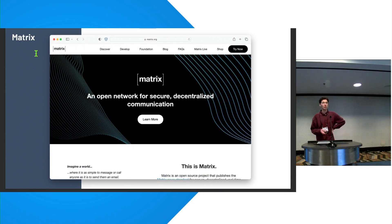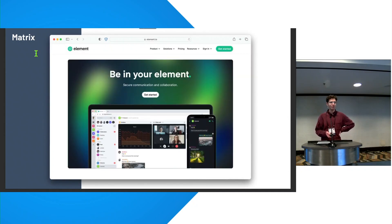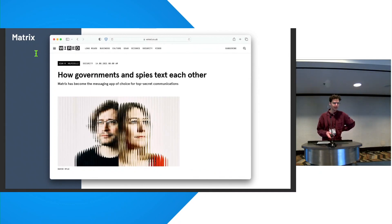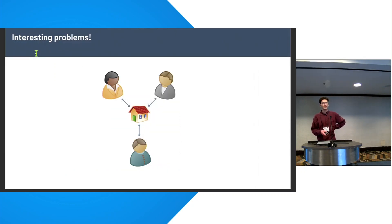So first of all, what is Matrix? Matrix is a secure, federated platform for communication, and they have a bunch of different apps that are powered by the Matrix standard. This is Element, which is one of them, and overall, they have around 80 million users, and that includes a number of European governmental organizations and their militaries. So it's quite popular.